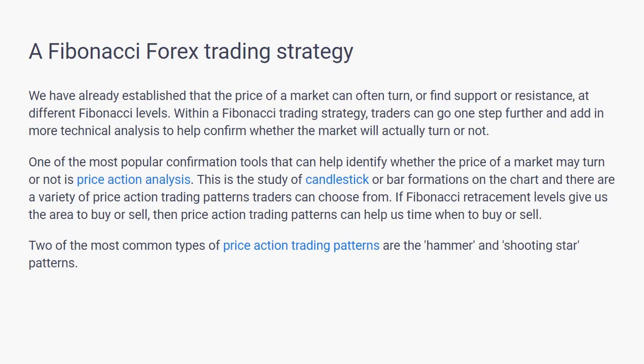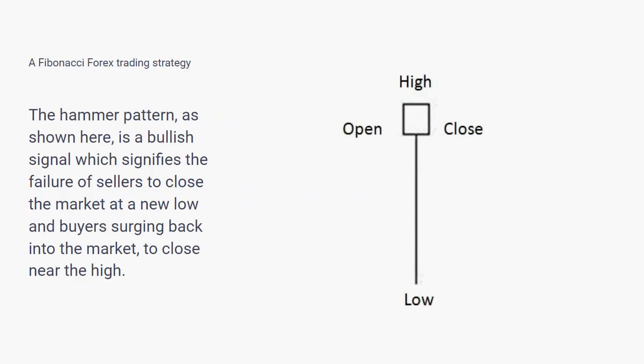Two of the most common types of price action trading patterns are the hammer and shooting star patterns. The hammer pattern, as shown here, is a bullish signal which signifies the failure of sellers to close the market at a new low and buyers surging back into the market to close near the high.